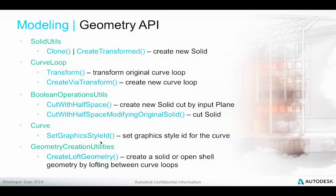Other enhancements to the Geometry API include creation of solids through the SolidUtils Clone and CreateTransform methods, creation of curve loops using Transform and CreateViaTransform, new boolean operations on solids to cut with a half space, the ability to control the graphics style of curve elements, and a new loft geometry creation method on the geometry creation utilities, which creates either a solid or open shell geometry by lofting between curve loops.